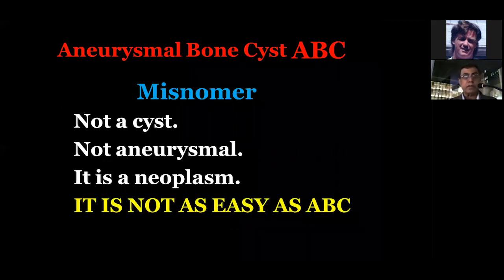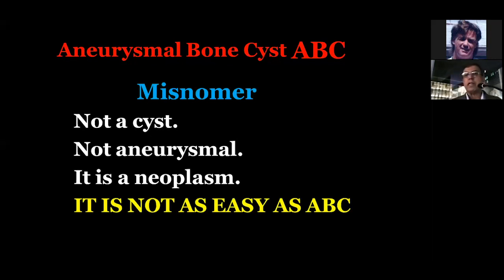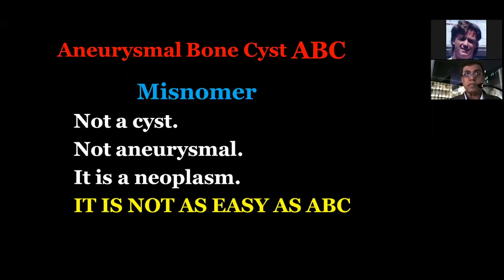So what is aneurysmal bone cyst, or ABC? If you ask any resident or neurosurgeon, you will remember ABC because it's easy to remember. But we have to state right now that this is a misnomer — a wrong name. It is not a cyst. It is not aneurysmal. It is a neoplasm. And it is not as easy as ABC — it can be very difficult.